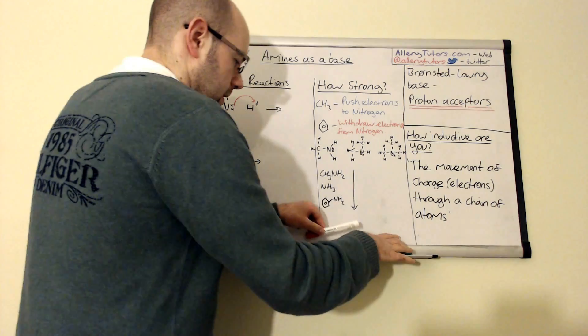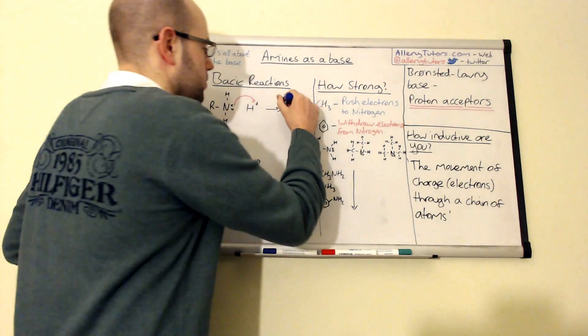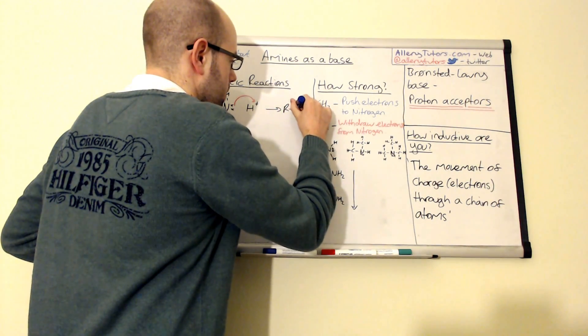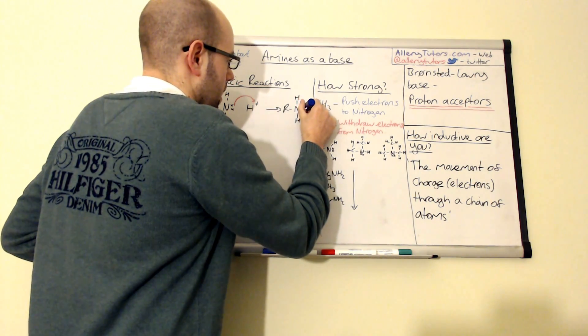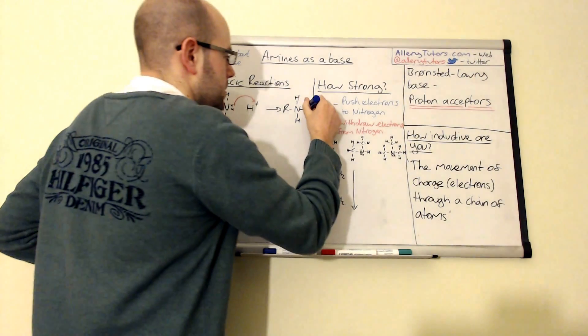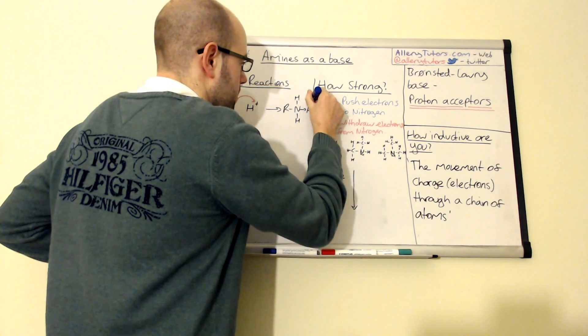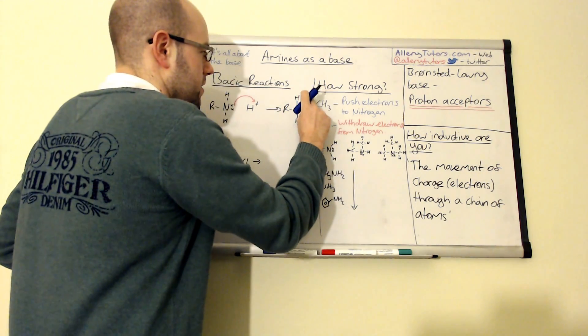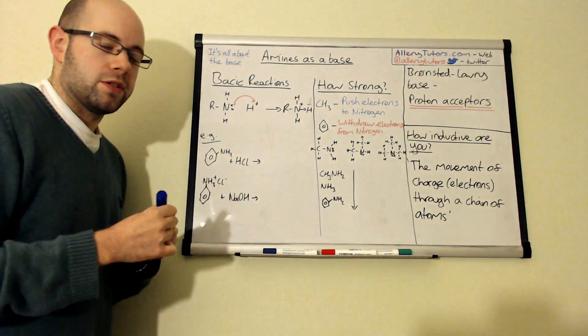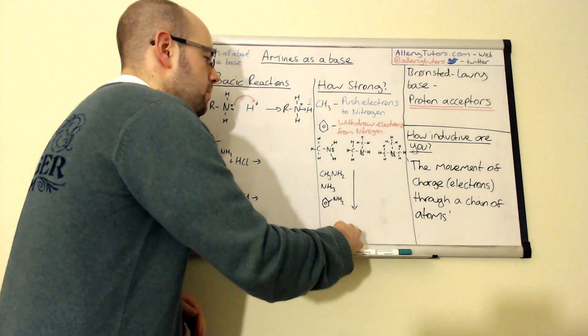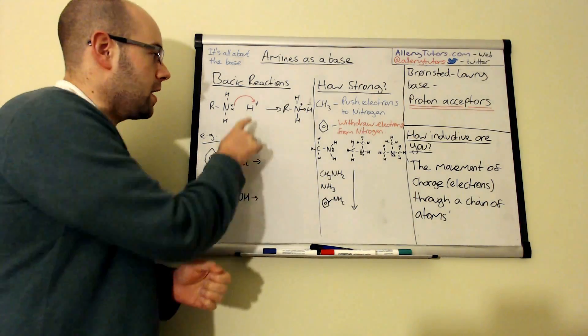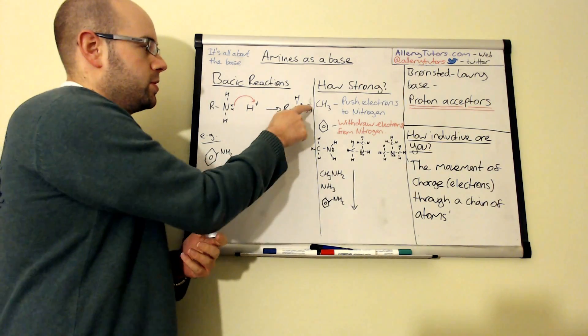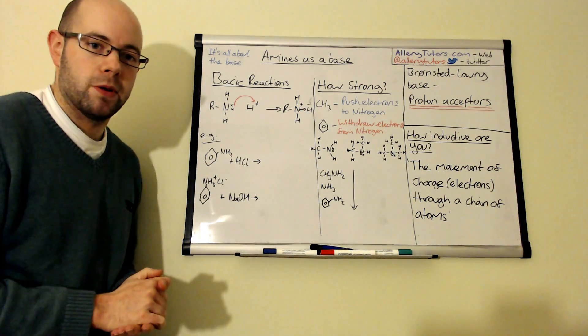And it will form a salt. So for R, N, H, H we actually have a dative covalent bond with a positive charge that sits onto the nitrogen. So this is an alkyl ammonium group or an alkyl ammonium ion, but if you had HCl here for example this would be a salt, an ammonium salt.